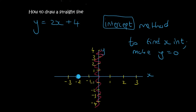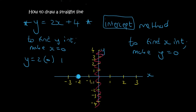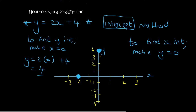Now we work on the y-axis line to find the intercept there. On the y-axis, x is always 0. So to find the y-intercept, we make x equal to 0. We go to our equation, make x equal to 0, and if you work that out you get 4. So we know the y-intercept is at y equals 4. There we have our 2 points, and you only need 2 points to draw a straight line.